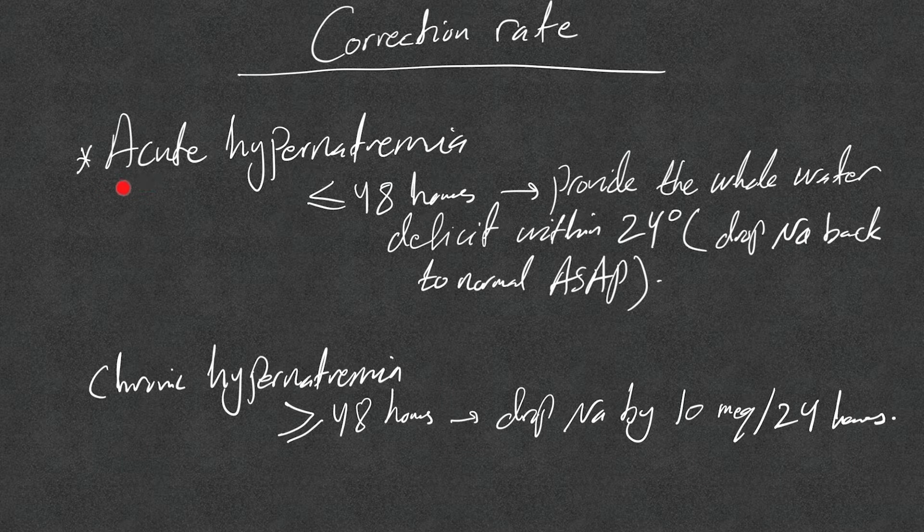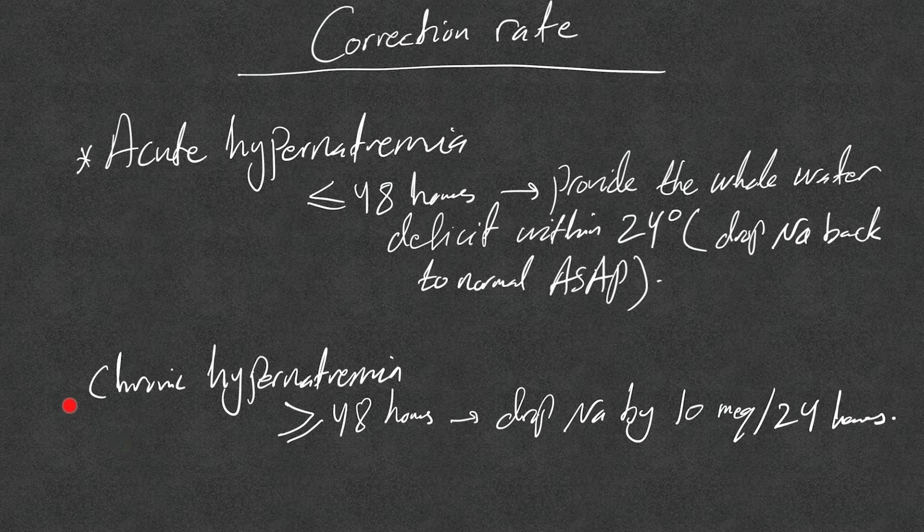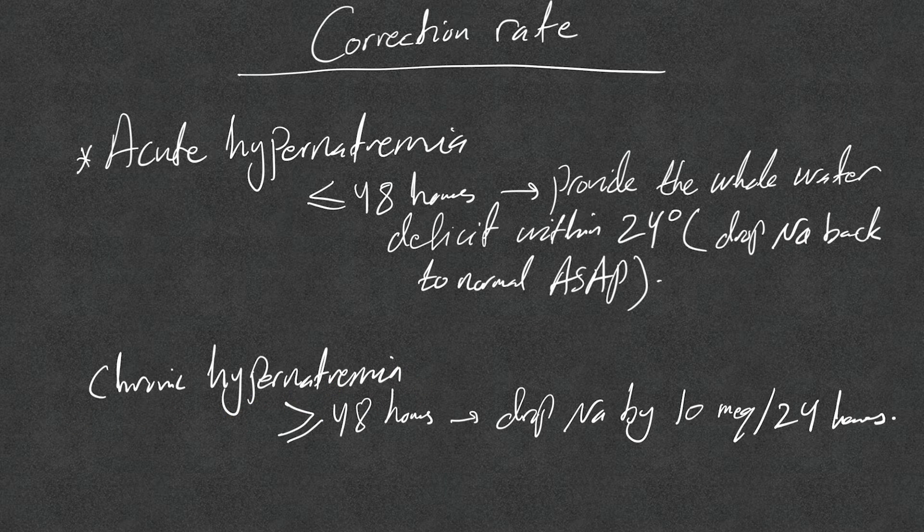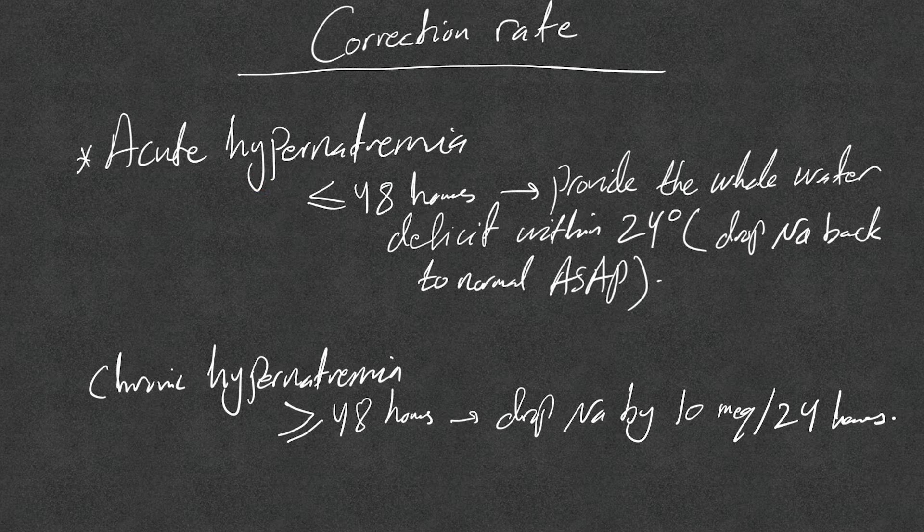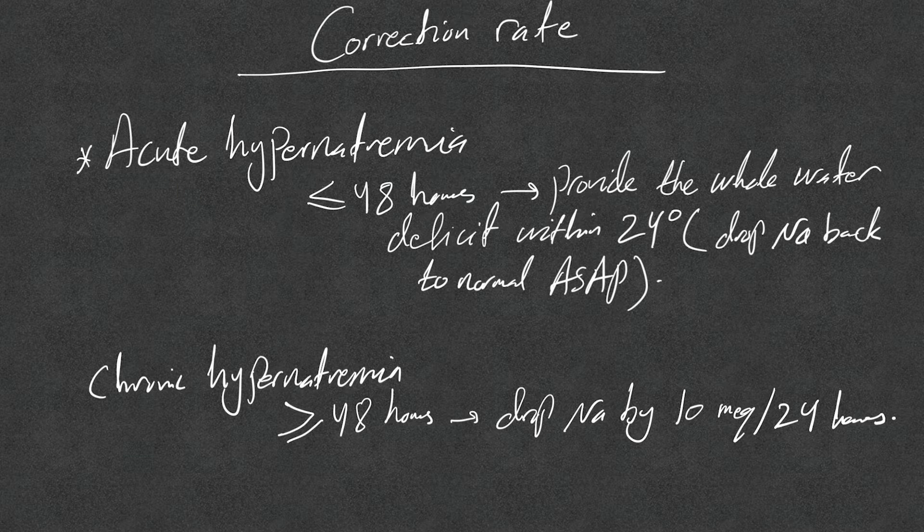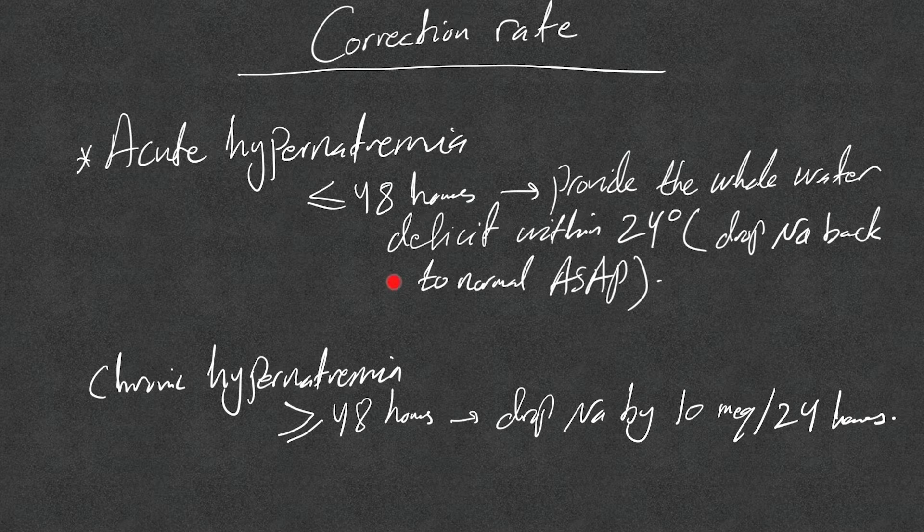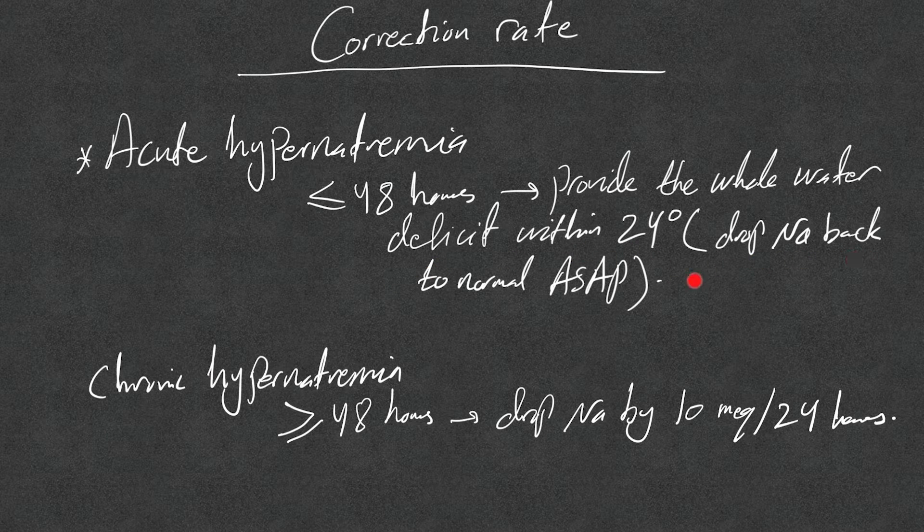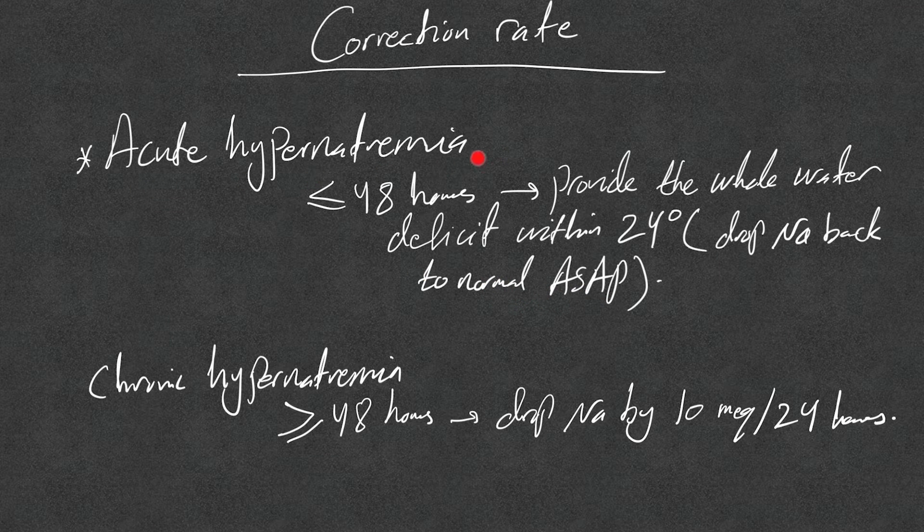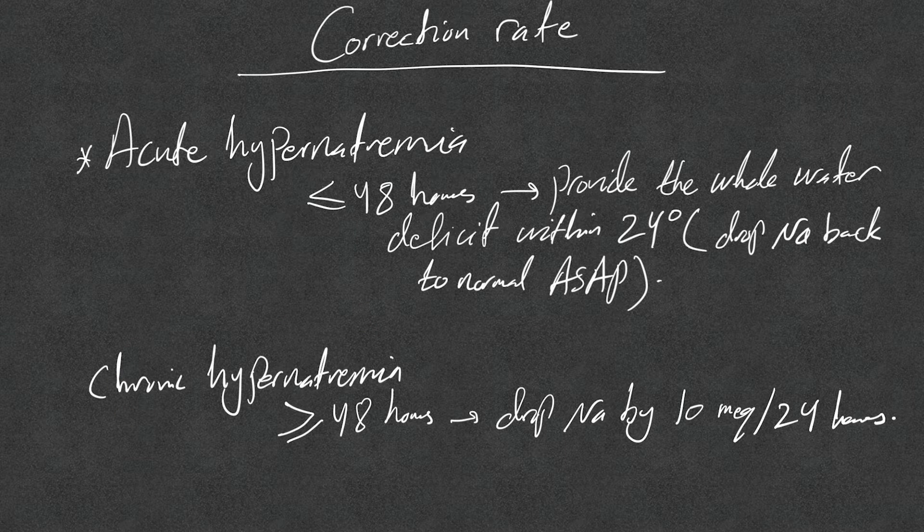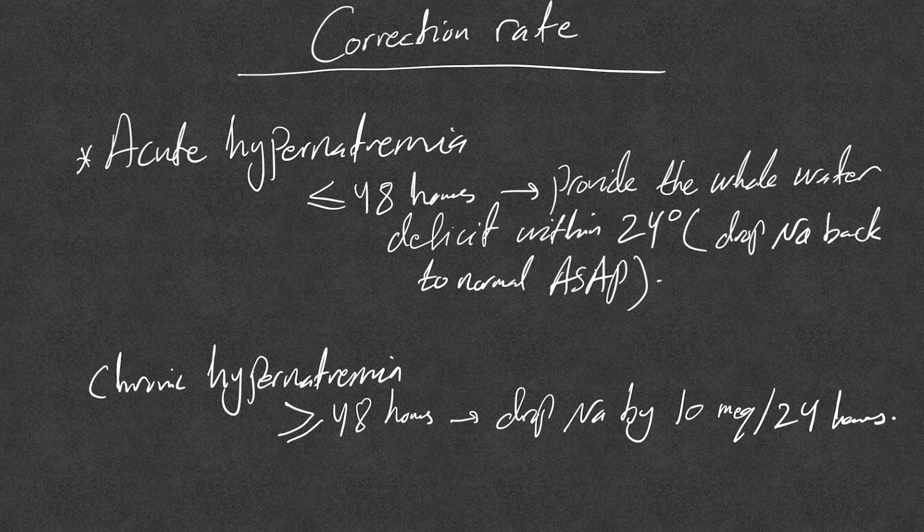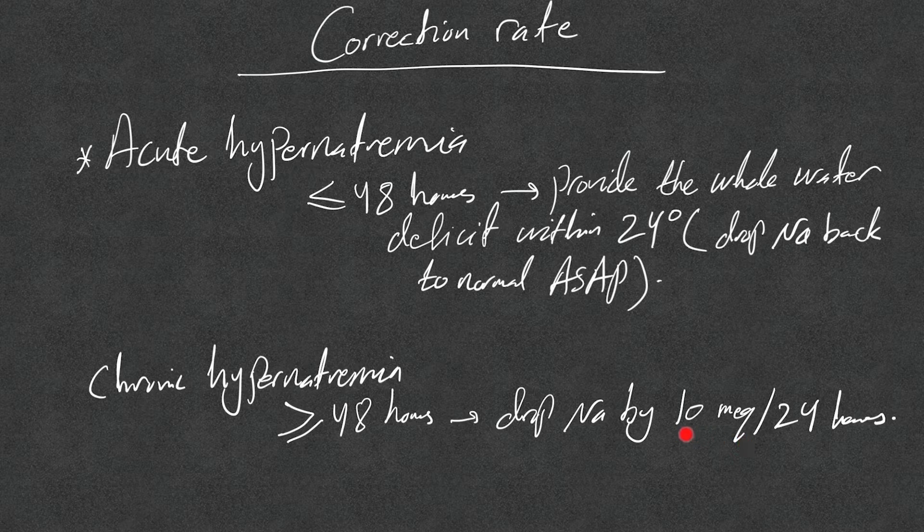Now correction rate: how fast should we correct the hypernatremia? There is acute and chronic hypernatremia. Most hypernatremia cases in the hospital you will be dealing with are chronic hypernatremia, with few exceptions I'll talk about at the end of this video. About acute hypernatremia, which presents less than 48 hours: in these cases, acute hypernatremia, we need to provide the whole water deficits in one day, regardless how small or how big. We need to drop sodium back to normal as soon as possible because this improves survival, believe it or not. In chronic hypernatremia, whether the patient is symptomatic or asymptomatic, we drop it by 10 milliequivalents per 24 hours.